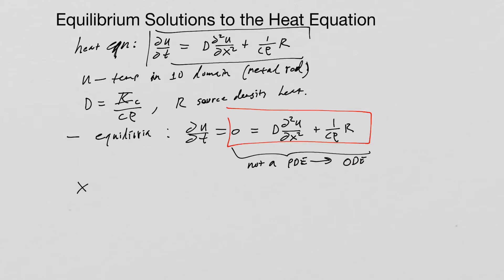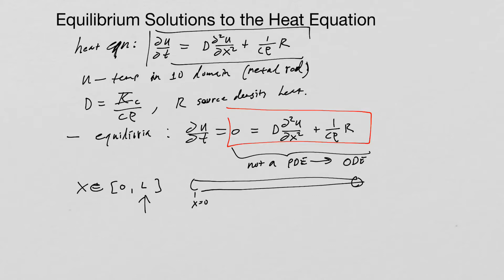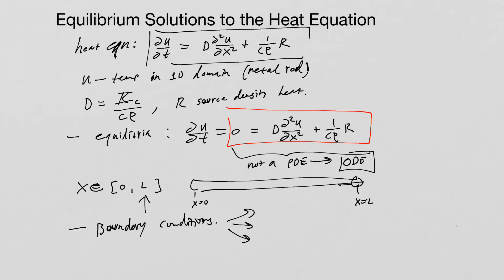Of course we need a domain. Our rod runs from zero to L, starting at x equals zero and going to x equals L. This is an ordinary differential equation and we also need boundary conditions. From a previous video, there are three different types: fixed temperature, zero flux, and mixed.